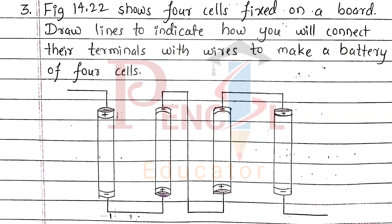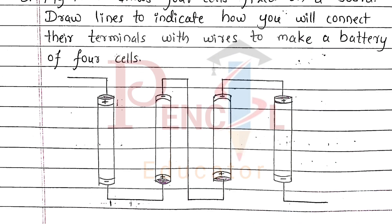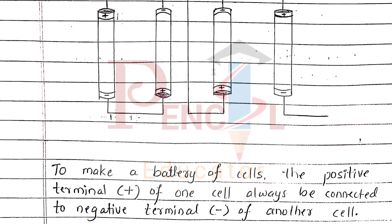Third question, figure 14.22 shows four cells fixed on a board. Draw lines to indicate how you will connect their terminals with wires to make a battery of four cells. To make a battery of four cells, the positive terminal of one cell must always be connected to the negative terminal of another cell.